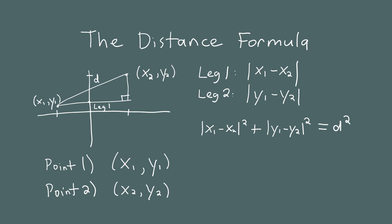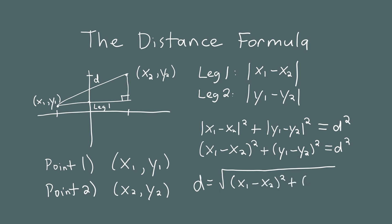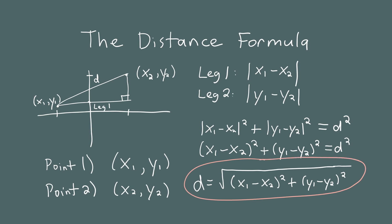Since squaring any number guarantees a positive result, we can drop the absolute value signs. So we have (x1 minus x2) squared plus (y1 minus y2) squared equals d squared. Taking the positive square root of both sides gives us the distance formula: d equals the square root of (x1 minus x2) squared plus (y1 minus y2) squared. People will ask you to memorize this, but really it's nothing more than the Pythagorean theorem applied to coordinates.